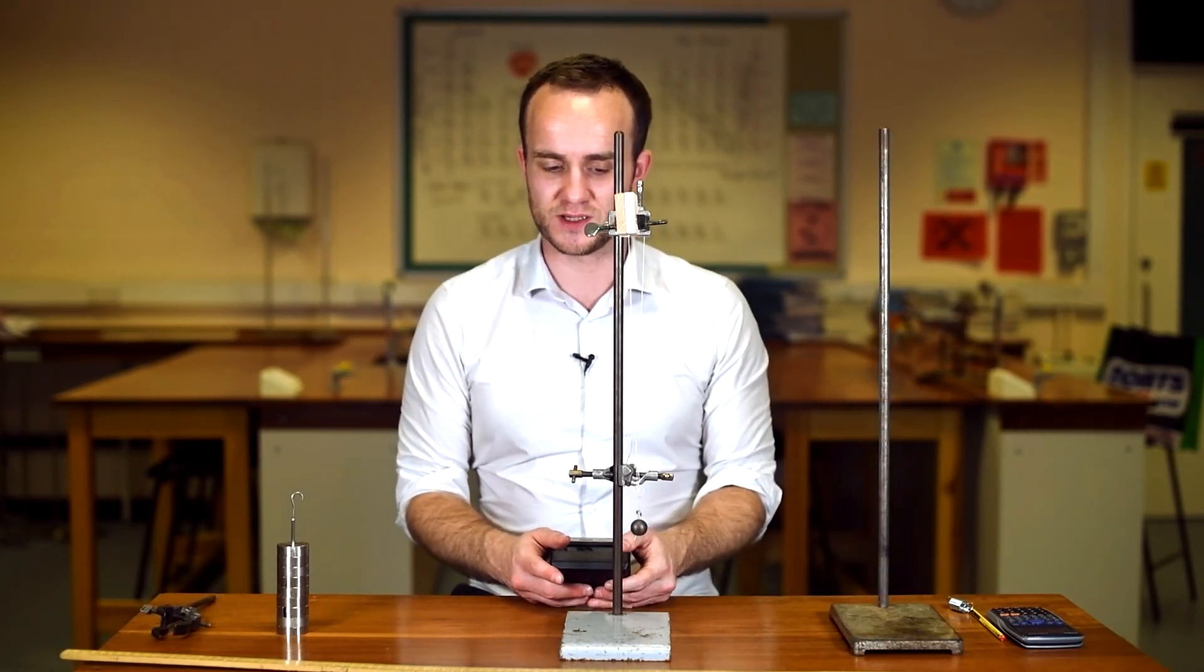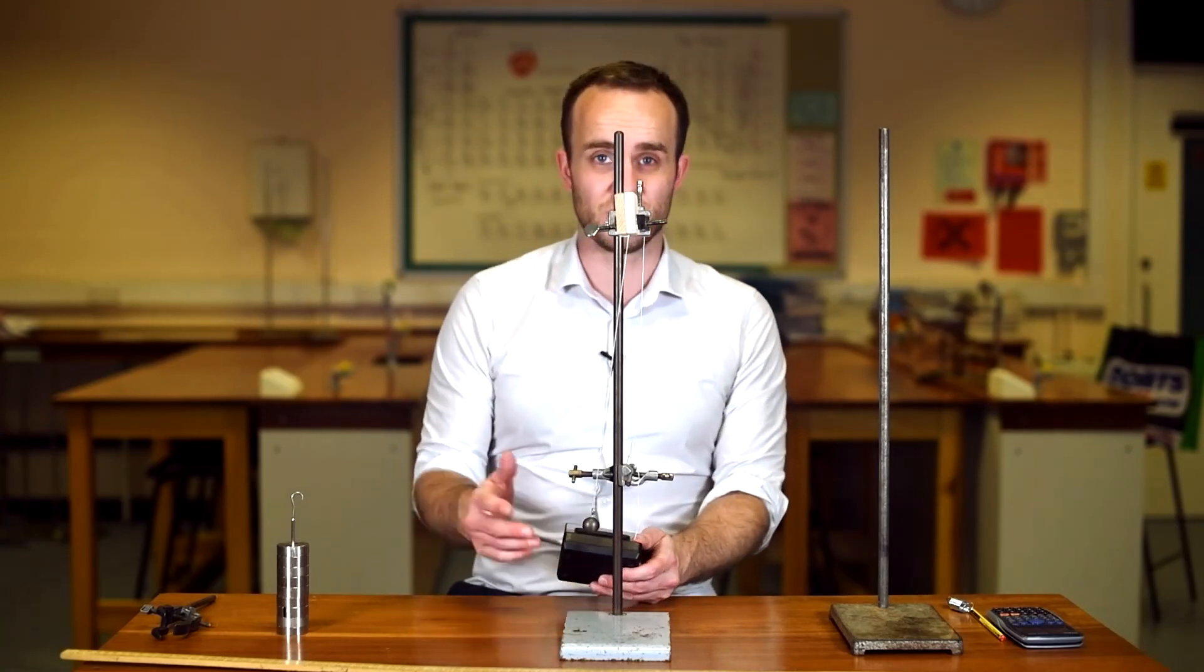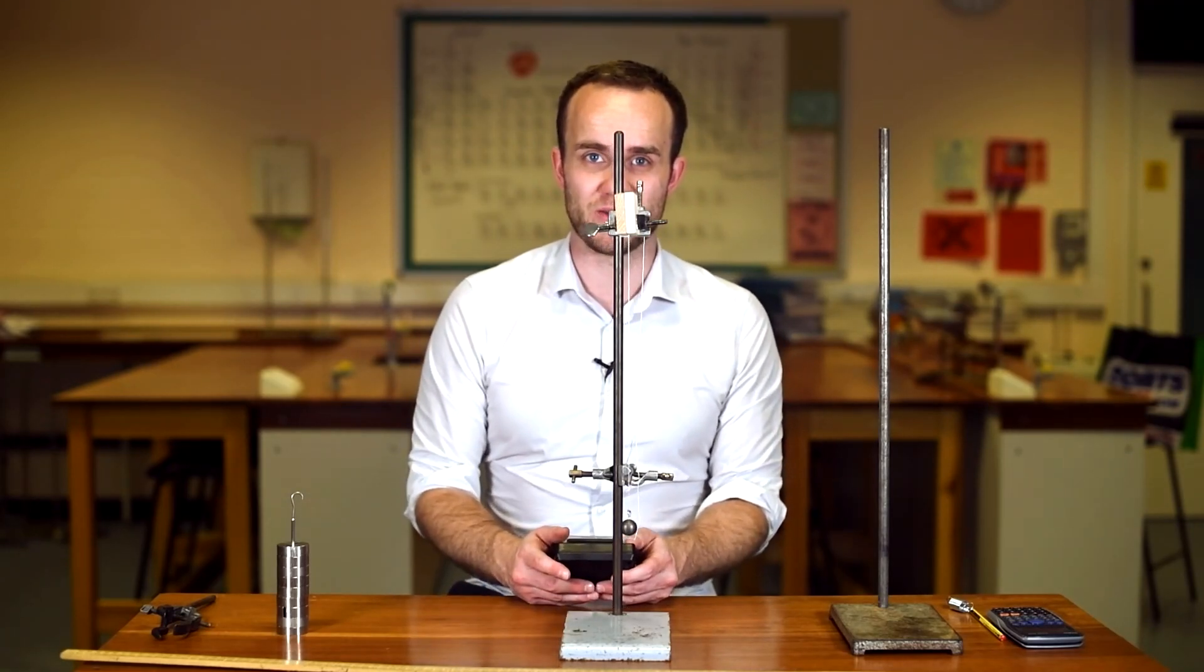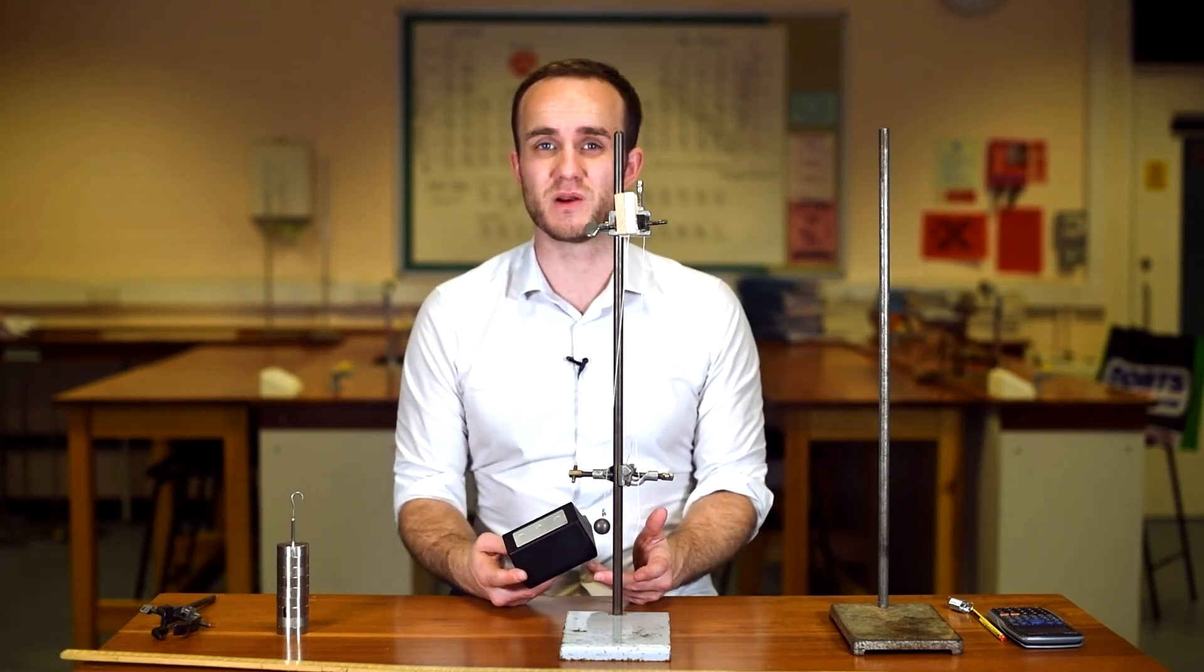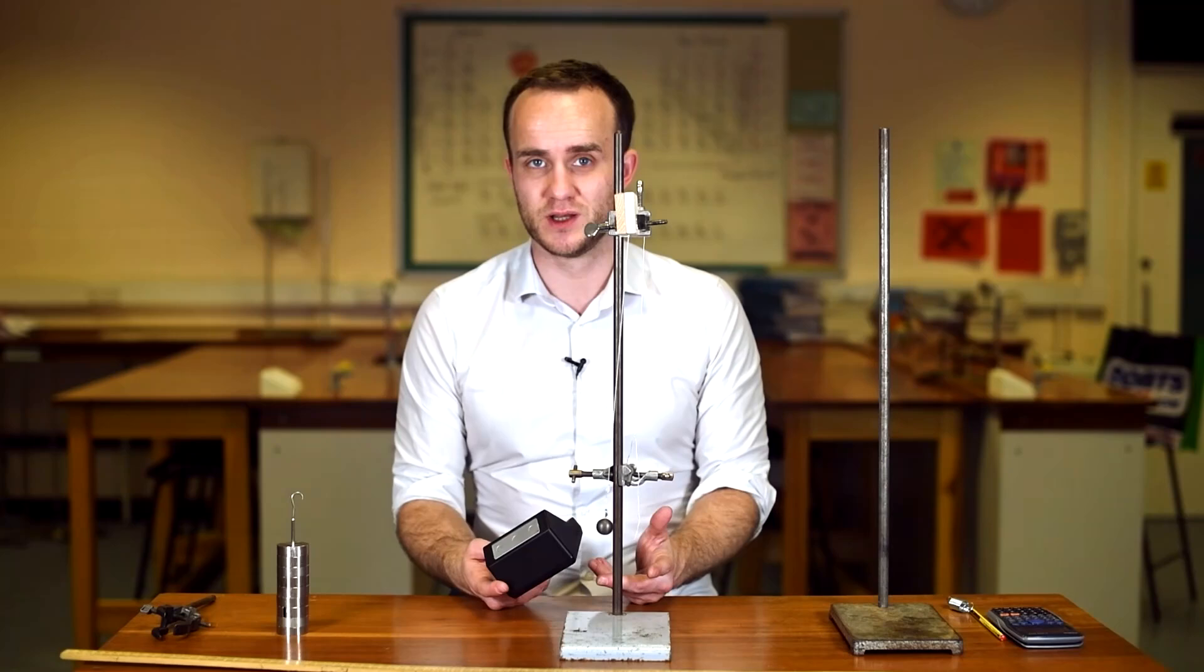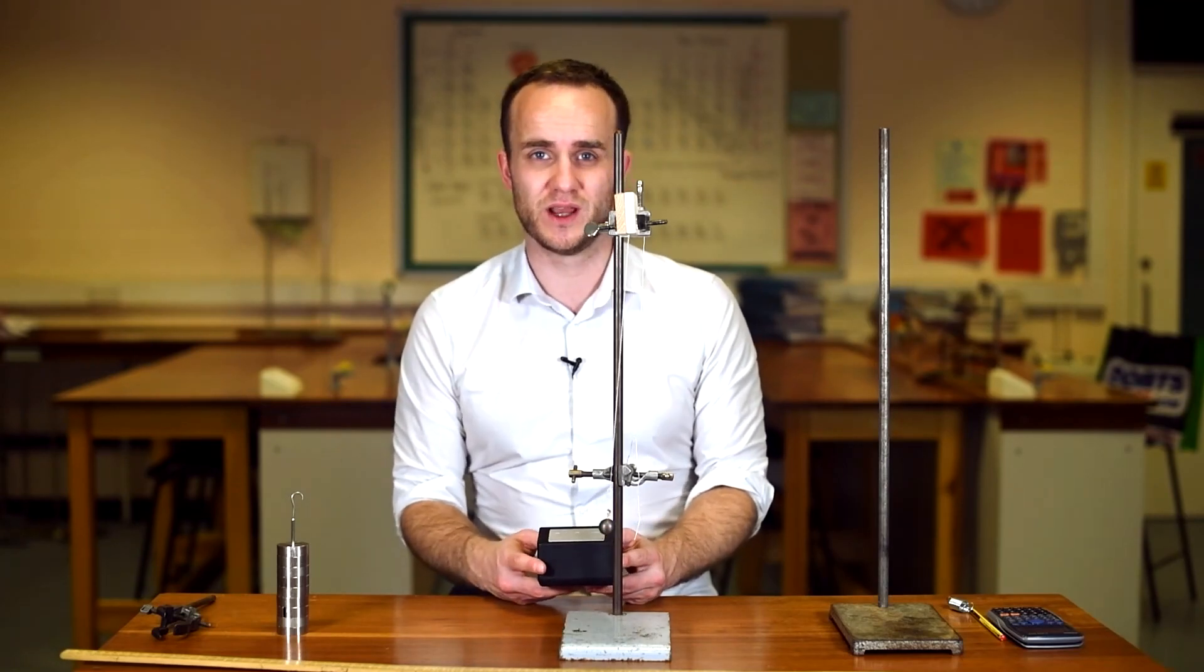I'm going to start my stopwatch when it passes equilibrium next, and obviously I would want to be at eye level with the fiducial marker if I was doing this for real. I could measure the time taken for one oscillation, but that's not going to be accurate, so I'm going to measure the time taken for 10 oscillations then average it.